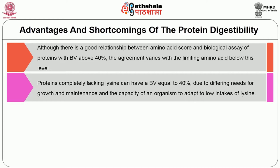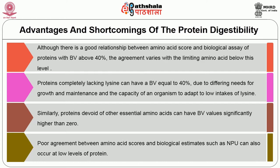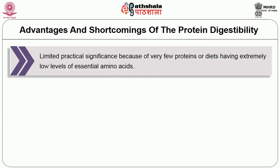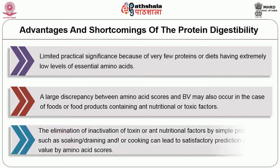Proteins completely lacking lysine — with a score of 0 — can have a biological value equal to 40 percent due to differing needs for growth and maintenance and the capacity of an organism to adapt to low lysine intakes. Similarly, proteins devoid of other essential amino acids can have biological values significantly higher than 0. Poor agreement between amino acid scores and biological estimates such as net protein utilization can also occur at low levels of protein. A large discrepancy between amino acid scores and biological value may also occur in foods containing anti-nutritional or toxic factors. The elimination or inactivation of toxins or anti-nutritional factors by simple processing such as soaking, draining, or cooking can lead to satisfactory prediction of protein value by amino acid scores.